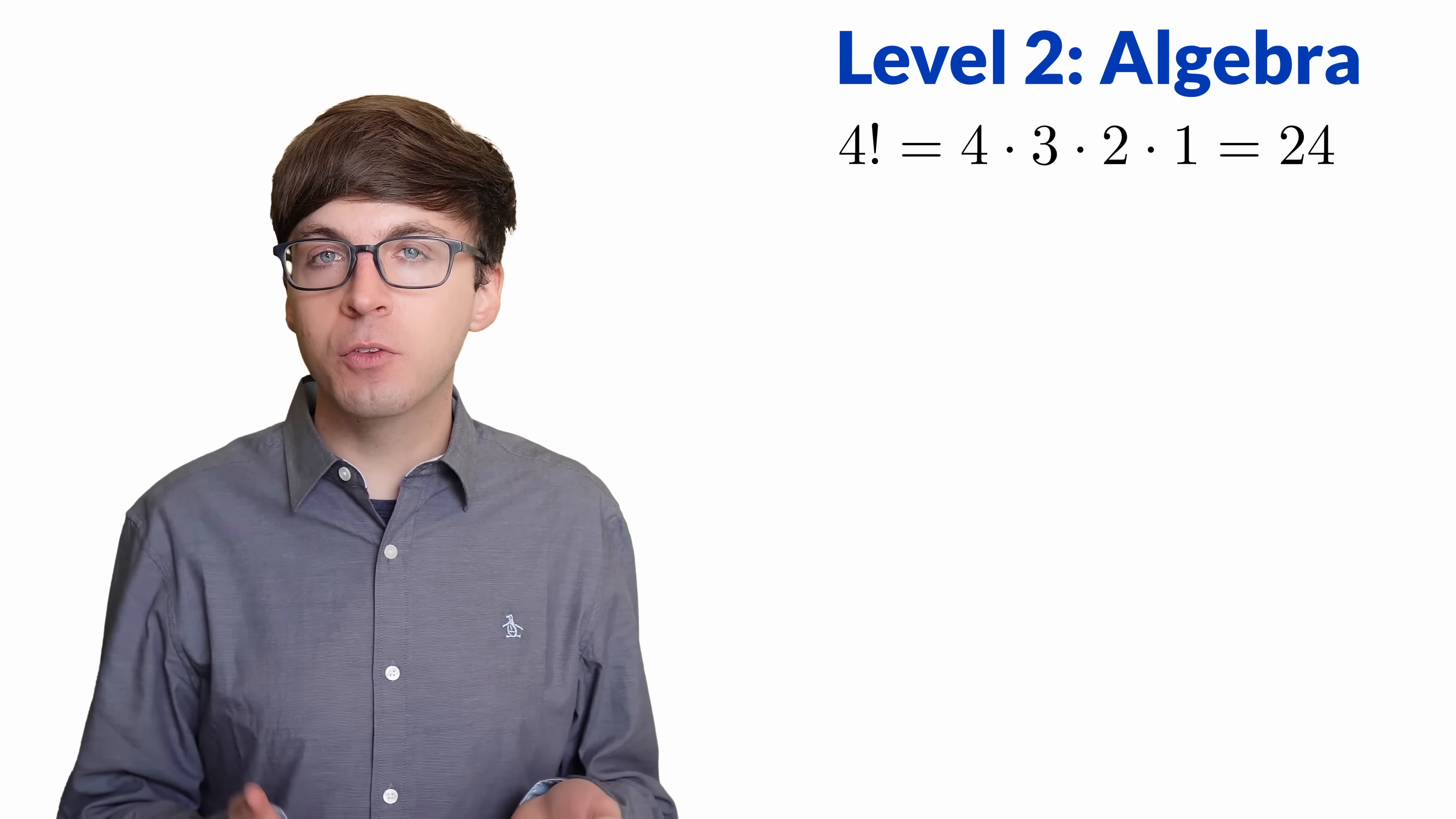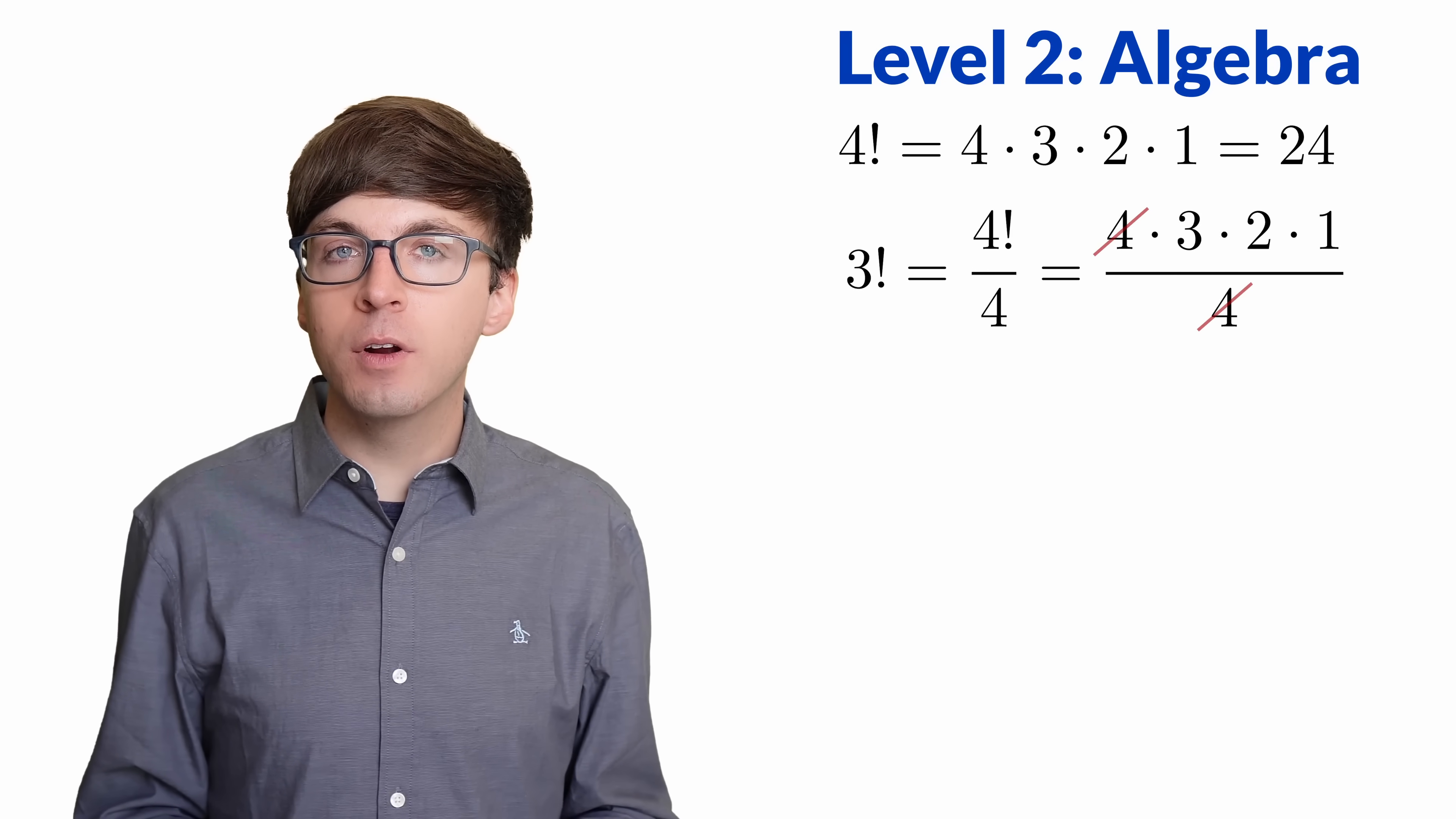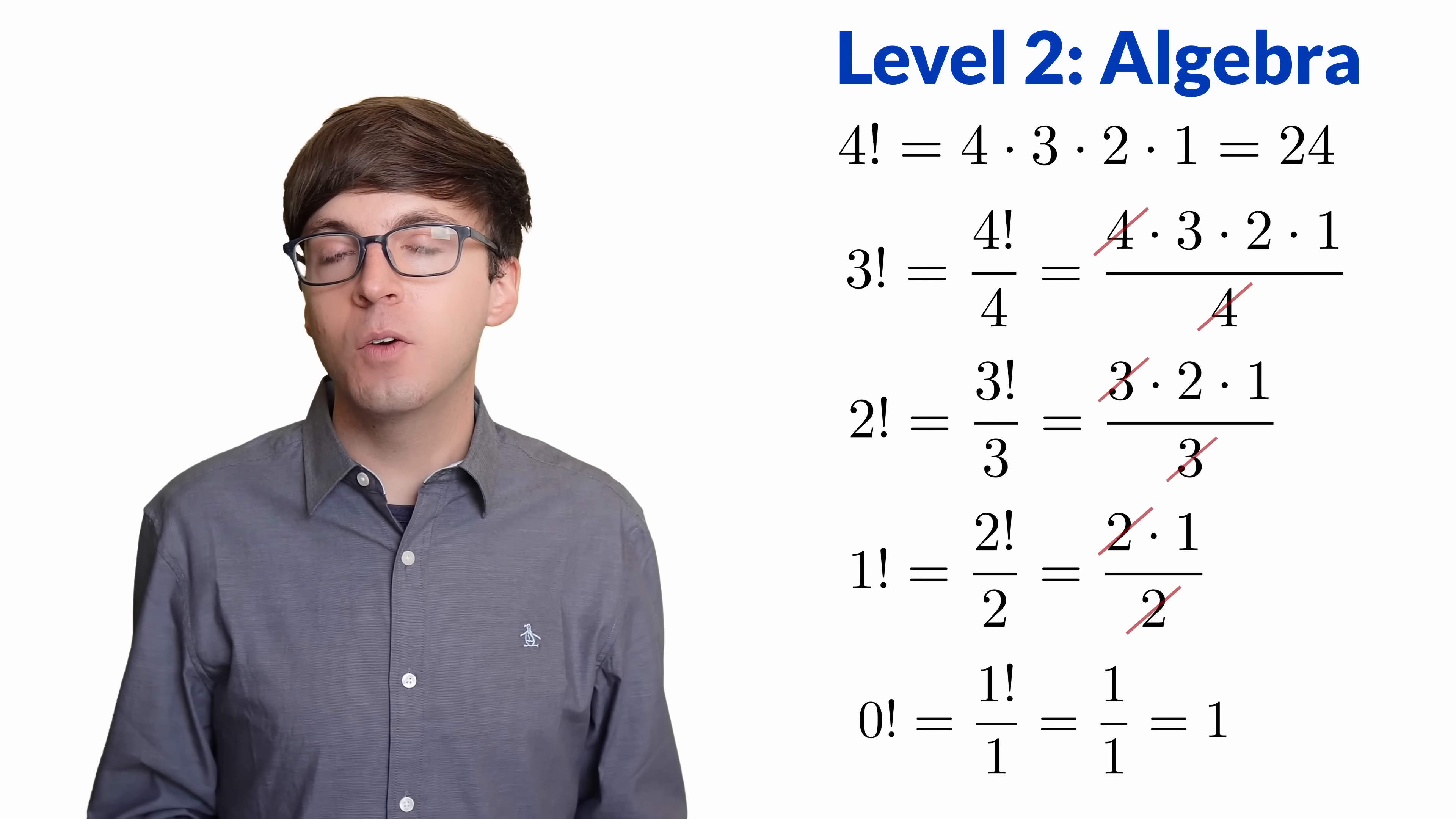For level 2, let's think algebraically. 4 factorial is 4 times 3 times 2 times 1. To find 3 factorial, we need to remove the 4. So in other words, 3 factorial equals 4 factorial divided by 4. Then the 4s cancel, and we're left with just 3 times 2 times 1. Then to get to 2 factorial, we divide 3 factorial by 3, leaving us with just 2 times 1. To get 1 factorial, we divide 2 factorial by 2. So how do we get 0 factorial? We need to divide by 1. So 0 factorial equals 1 factorial divided by 1, which equals 1.